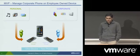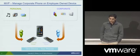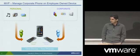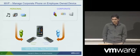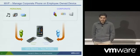VMware is actually working on a product called Mobile Virtualization Platform. We recently changed the name of it to Horizon Mobile. The idea is to be able to manage both a corporate phone and a personal phone on a single employee-owned device.